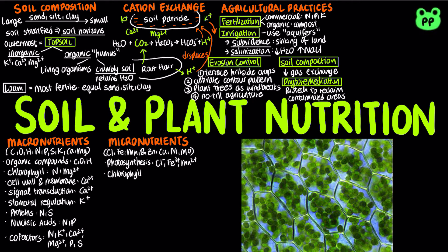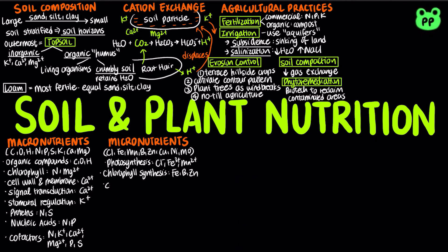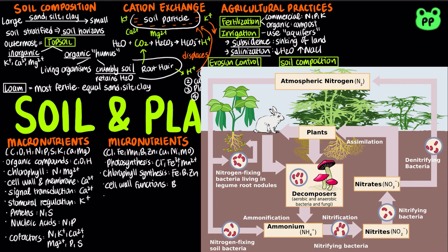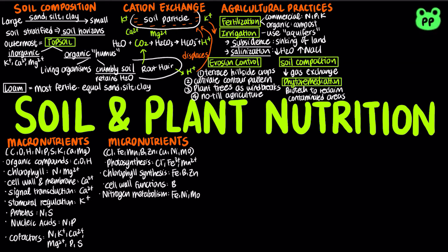Iron, boron, and zinc are cofactors in chlorophyll synthesis. Boron also plays a role in cell wall functions. Iron, nickel, and molybdenum play a role in nitrogen metabolism. Chlorine plays a role in water balance, and copper is an important component of many redox and lignin biosynthetic enzymes. Manganese is active in the formation of amino acids.